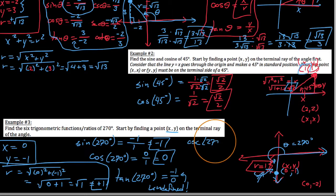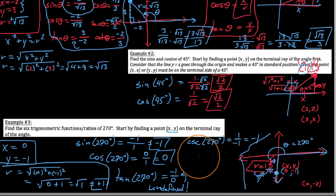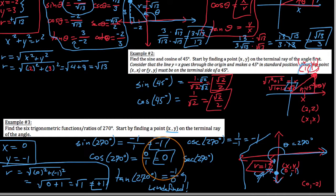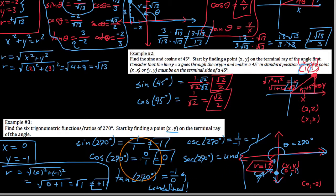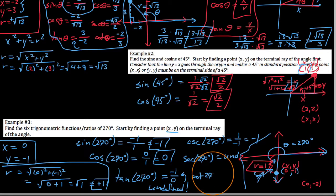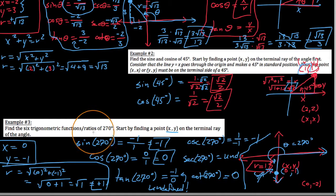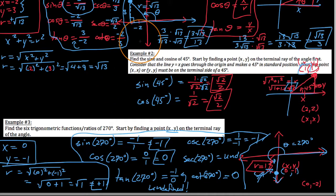When we reciprocate all these: the cosecant of 270 is the reciprocal of sine, so I get 1 over negative 1, which is still negative 1. Secant of 270: when we reciprocate zero, the reciprocal of zero is undefined, so the secant of 270 is undefined because cosine of 270 was zero. And the cotangent of 270 degrees: the reciprocal of undefined is zero. The reciprocal of zero is undefined and the reciprocal of undefined is zero. This is how you use the new definition of the trig functions to find the trig ratios of any angle theta so long as it's in standard position and you know a point on the terminal side.